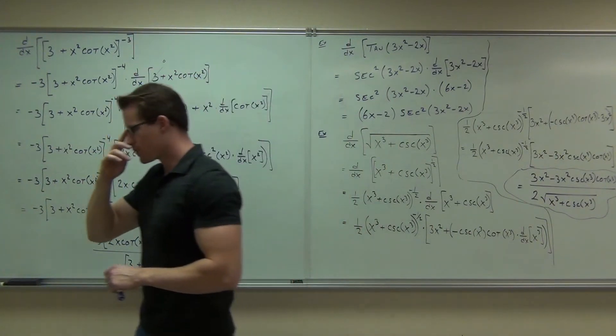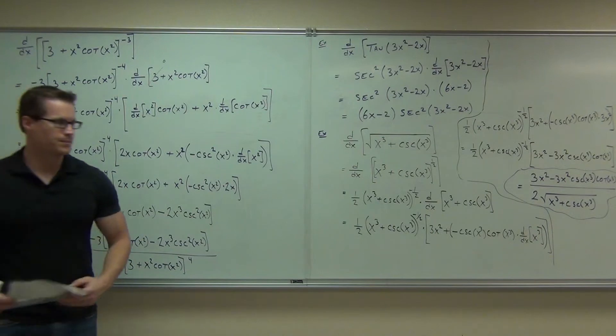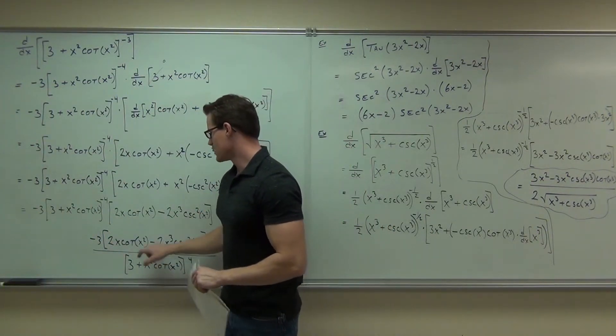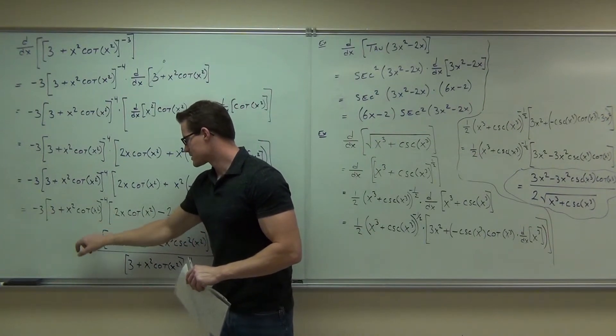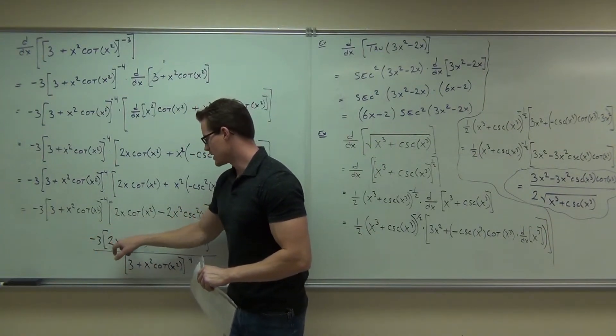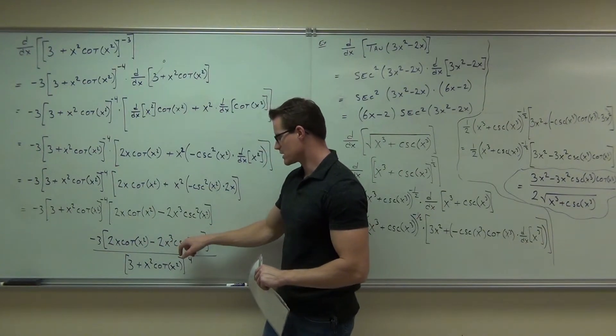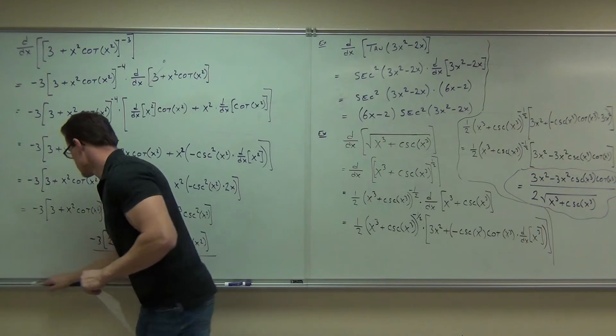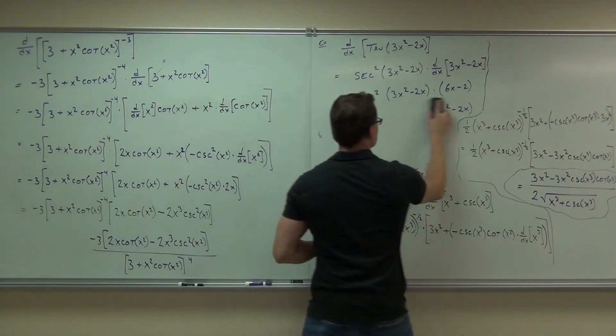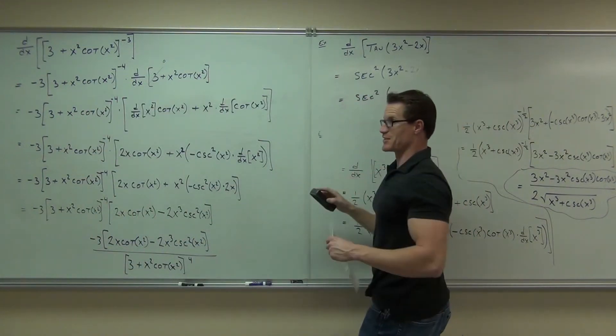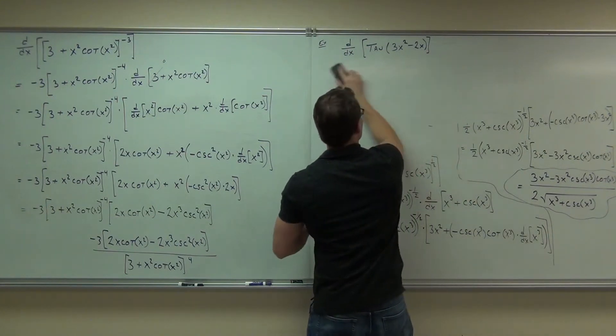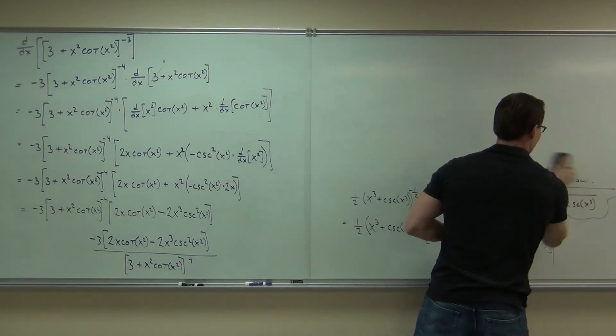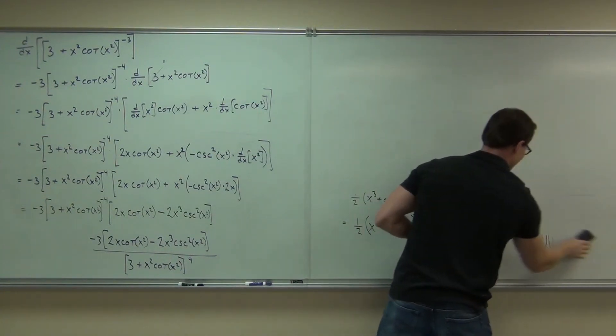All right. Can we start one more? We won't get all the way through it. Can I have a question? Yeah. Can you factor out the 2x right there? Yes. Yeah, I was saying that. You could factor out the 2x. This would become negative 6x. This would be cotangent x squared. This would be minus x squared cosecant squared x squared. Okay. And you could do that. If you want to get fancy, you know. I'm just trying to survive here. Thank you.